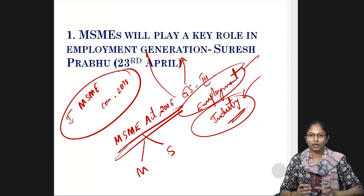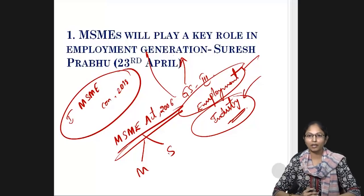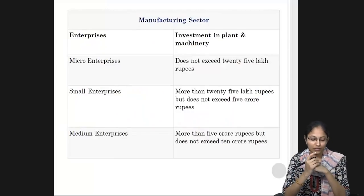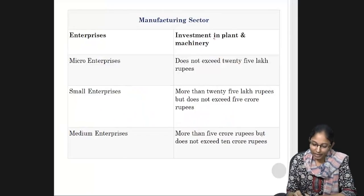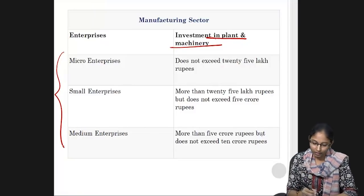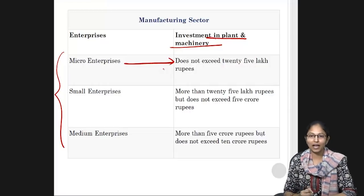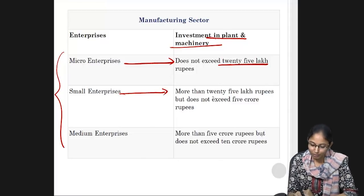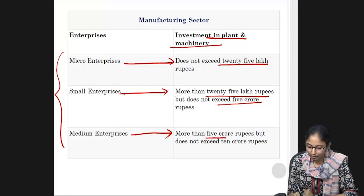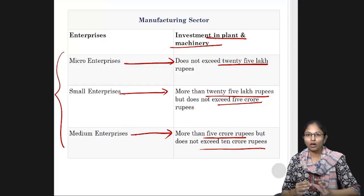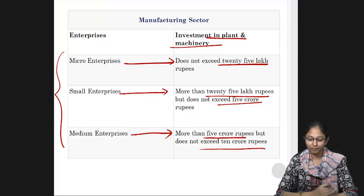In the Manufacturing MSMEs, based on investment in Plant and Machinery, enterprises are divided into Micro, Small and Medium. For Micro Enterprises, investment should not exceed 25 lakh rupees. For Small industry, investment is between 25 lakh to 5 crore rupees. For Medium industries, investment is greater than 5 crores and less than 10 crores. Industries above 10 crores are classified as Heavy Industry under the Manufacturing Sector.